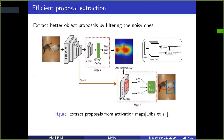For efficient proposal extraction: as we've seen, the proposals being extracted are mostly noisy and you end up processing many redundant ones. One proposed method is to generate the class activation map first and then obtain region proposals from this activation map, so you get better quality proposals with fewer of them, and this leads to better performing algorithms.